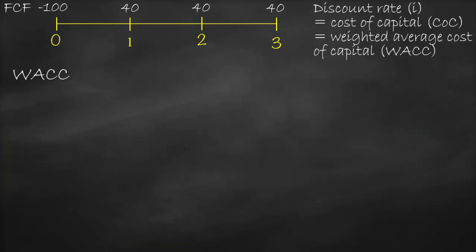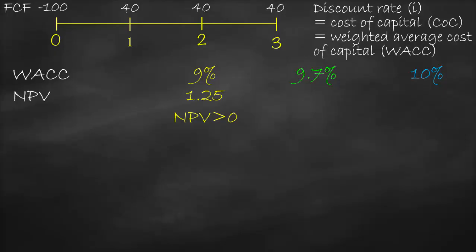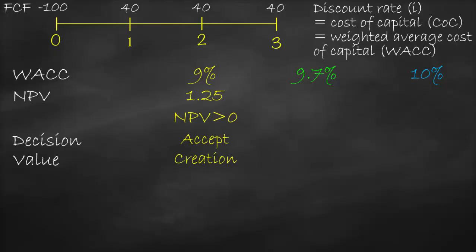Now let's examine three scenarios by changing the discount rate — our WACC — to nine percent, 9.7 percent, and ten percent, to see what happens to NPV as WACC increases. At WACC of nine percent we already calculated NPV to be 1.25 million, which is bigger than zero. Our decision criteria: if NPV is greater than zero, we accept the project, because it creates value and increases wealth.